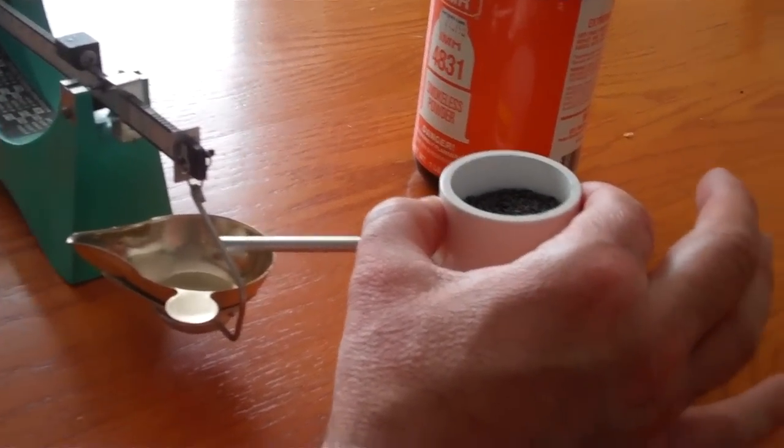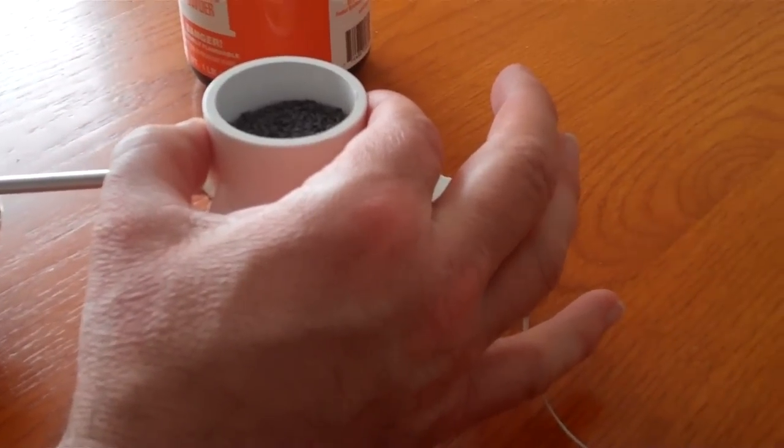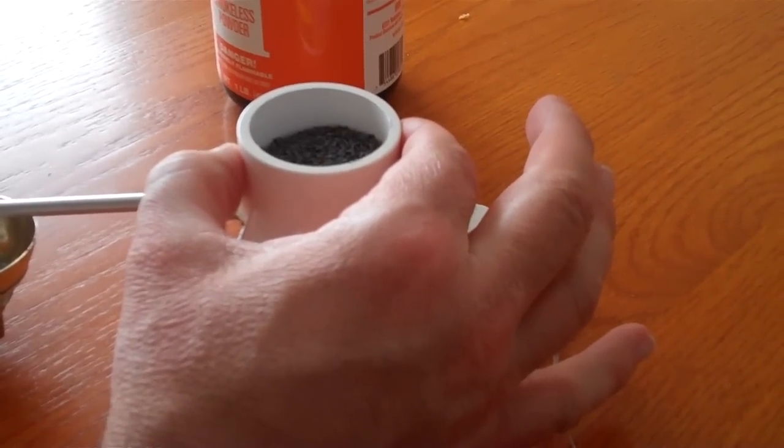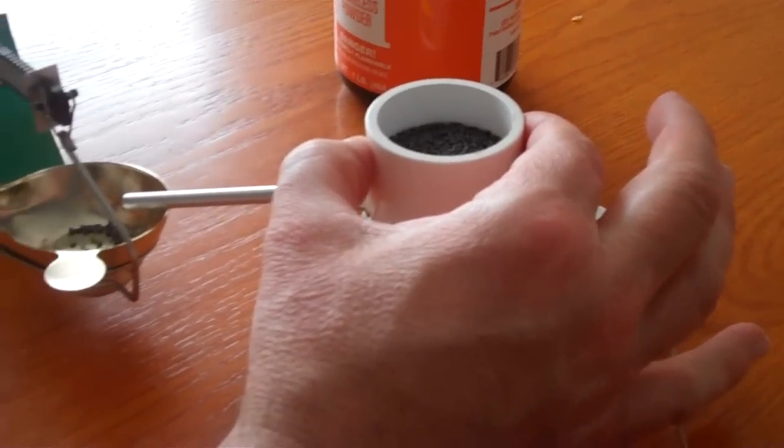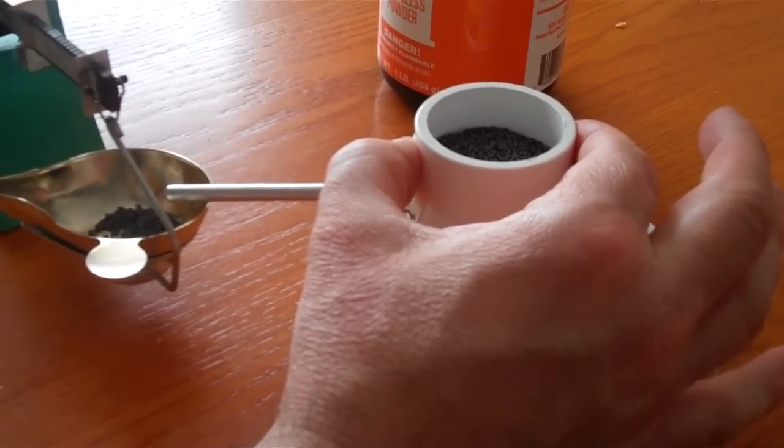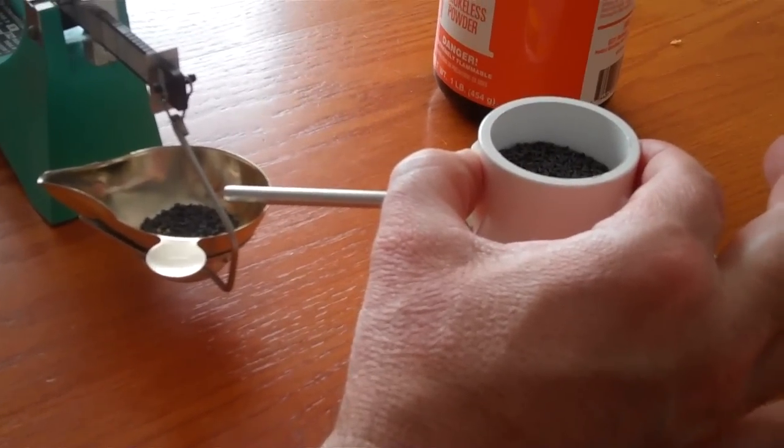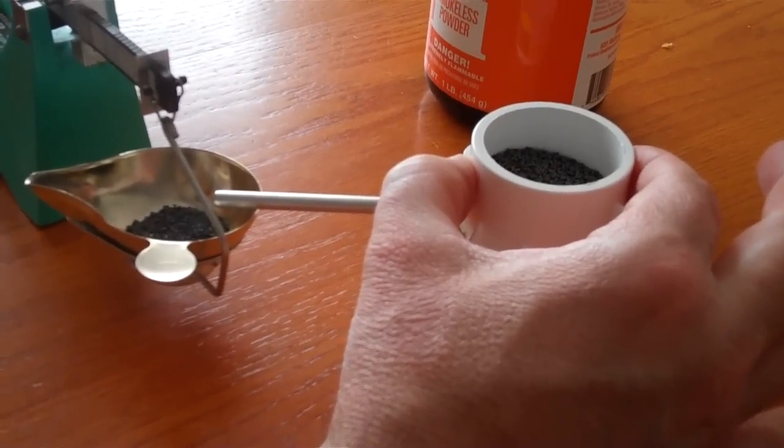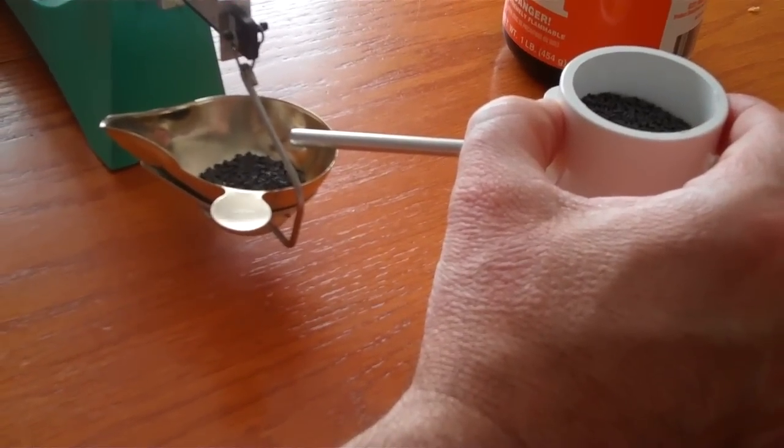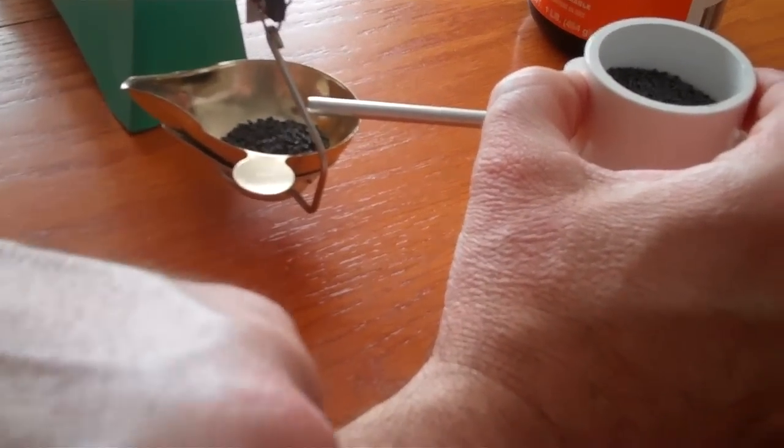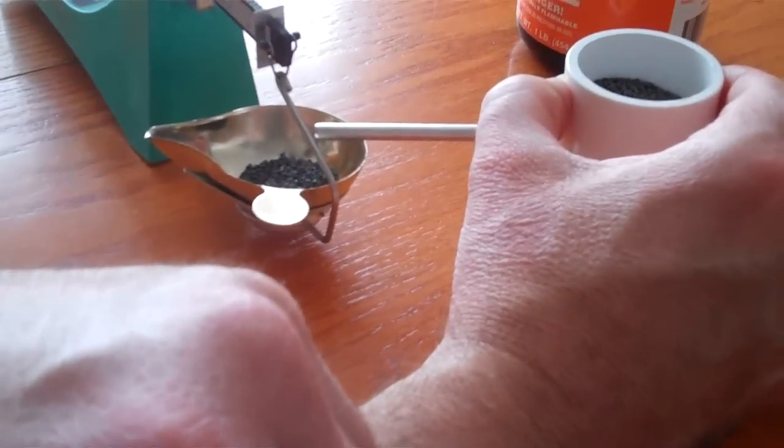So here we're going to demonstrate how the powder trickler actually works. My assistant here is going to turn on the powder trickler while I hold it and here you can see the powder is flowing. I have it set right now to 55 grains which is a .30-06 load on a 168 grain bullet, and we don't have a switch yet so my cameraman, oh stop.